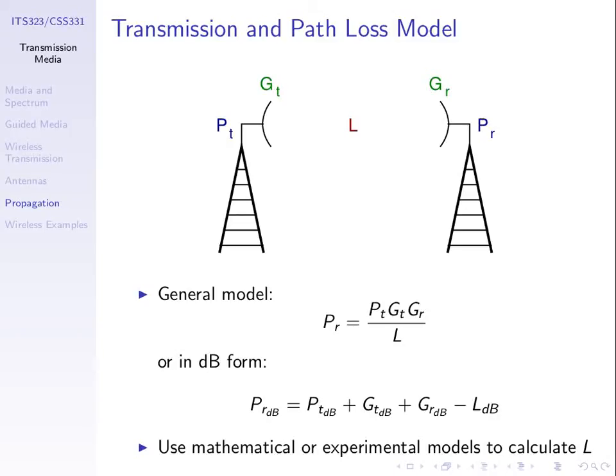We've spent some time looking at different aspects of wireless transmission and have arrived at a model for how the signal is transmitted, or how we can relate the transmit and receive power. We transmit a signal with some power PT, and the antenna introduces some gain compared to an isotropic antenna — denoted GT at the transmitter and GR at the receiver. Between the antennas, as the signal propagates, there's attenuation. We denote that as the path loss, L.